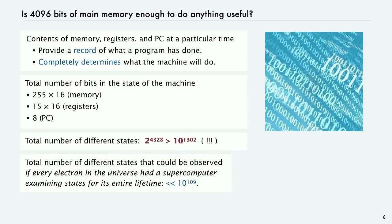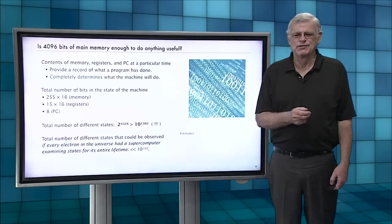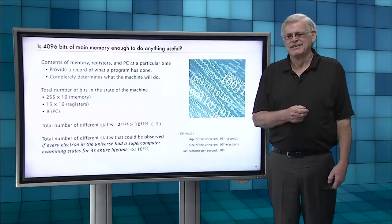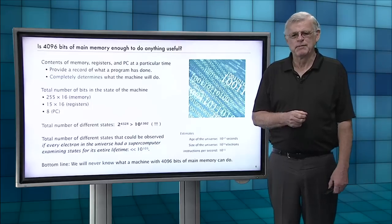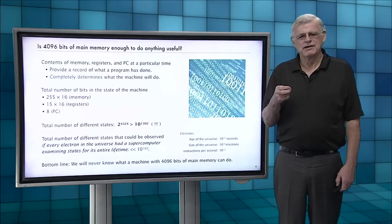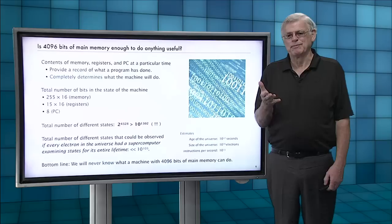If you took every electron in the universe and put a supercomputer examining states for all its entire lifetime, you only get to about 10 to the 109th states. That 10 to the 1,300 is a stupefyingly large number. It means you need 10 to the 1,200 universes, every electron in all those universes, running supercomputers. And these are our basic estimates. You can argue with them, but it doesn't affect the main point.